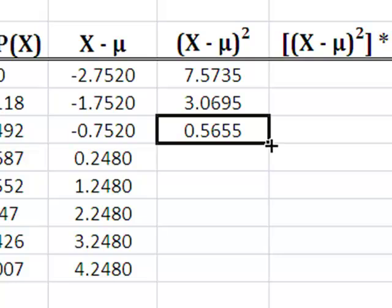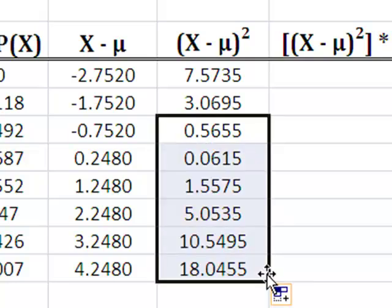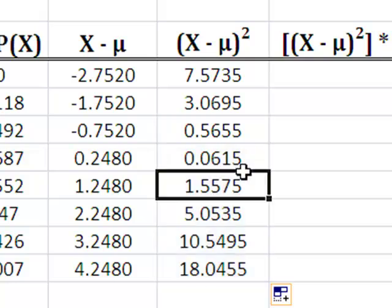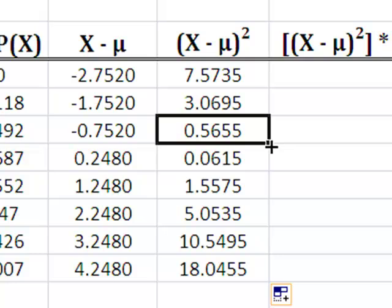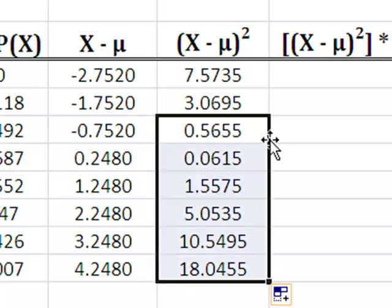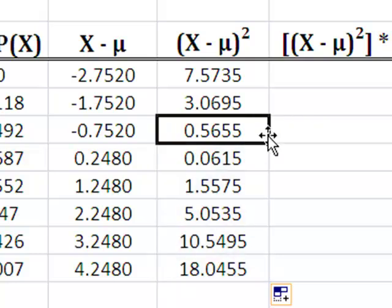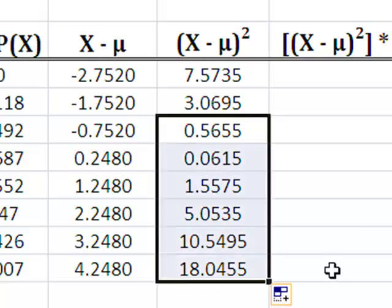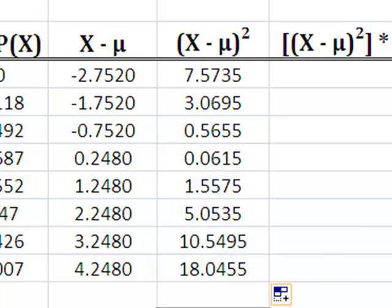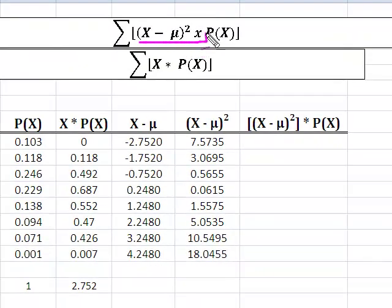Excel picks up the pattern for me because it's adjacent cells, and I can, again, remember all I did was just go in and grab this little corner, get my plus, and drag it down, and it gave me what I needed. Now, now I've got all of my X's times the mean, so I've got this part of the formula right here done.